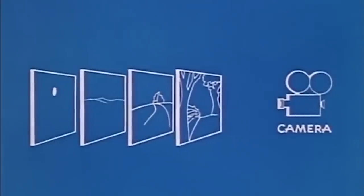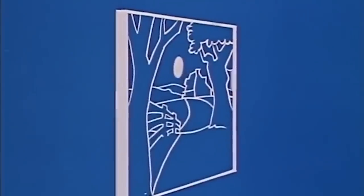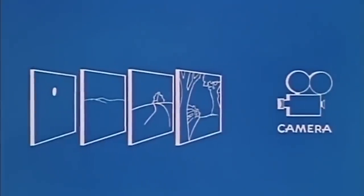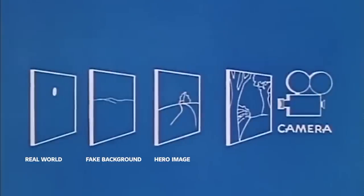Thanks Walt, I'll take it from here. Disneyland is special because it's designed by visual artists — it's not a real city. The illustrators who created Walt's cartoons use the same design principles to make Disneyland appear more aesthetically perfect than the real world. Four layers are used to create many of the best views: the real world, a fake background, the hero image or focal point, and the keyhole that frames it — creating a 2D composition in a real-world environment by forcing you to observe from a specific focal point.